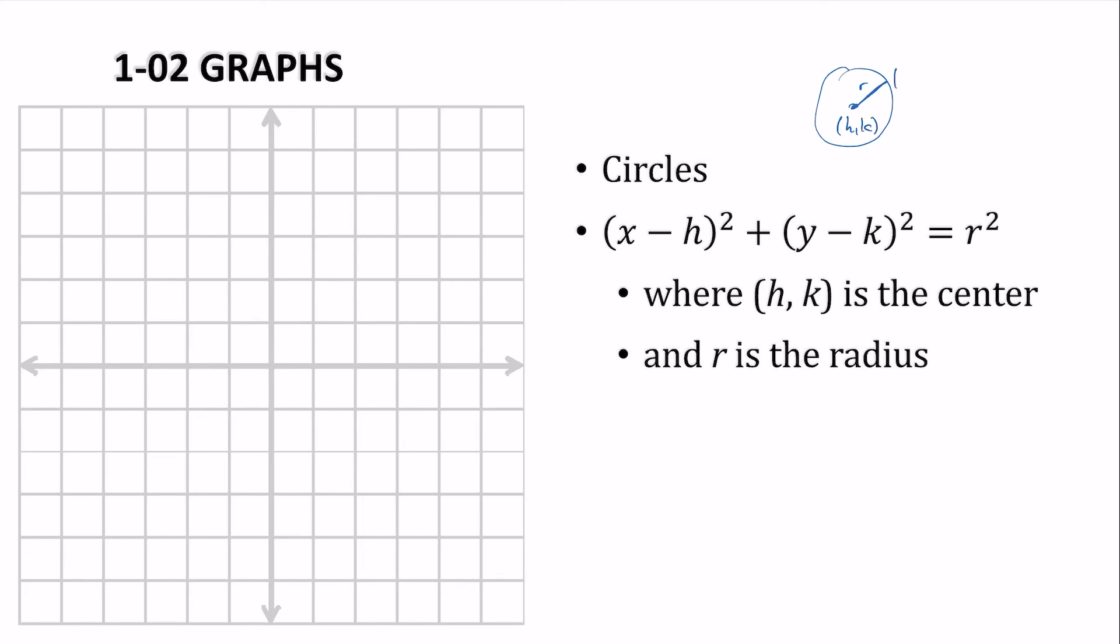This distance, this point, is x-y. So we just make a right triangle. The difference on the horizontal would be x-h. The distance up and down would be y-k. So it's just a-squared plus b-squared equals c-squared.